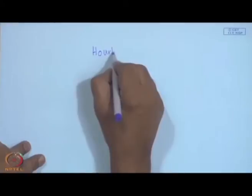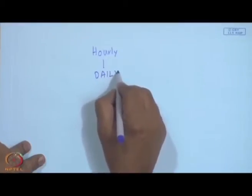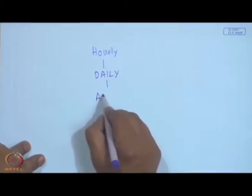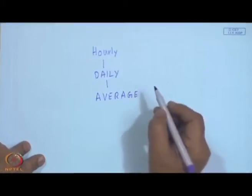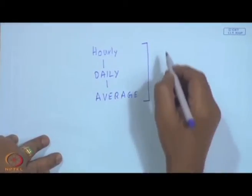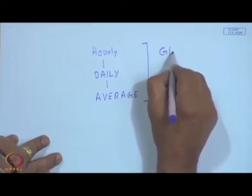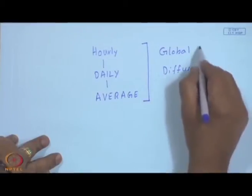We recalled the necessity of certain measurements of solar radiation, which may be on an hourly time scale. From hourly measurements, you construct or calculate the daily values, from which you may derive various averages: average hourly value, average daily value, average monthly value, or even yearly values. Most of the time, it is the global and diffuse components that are measured.